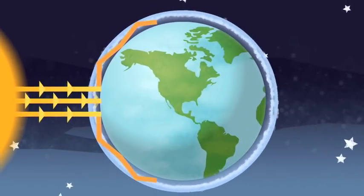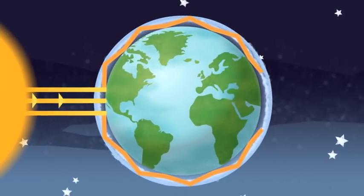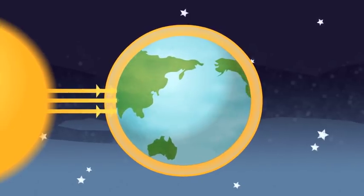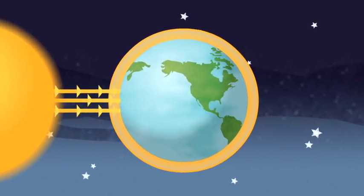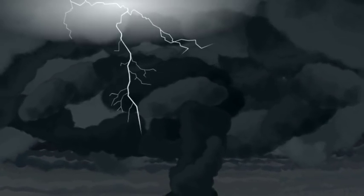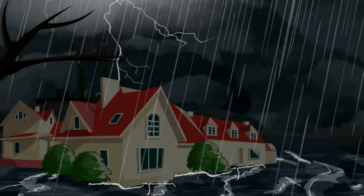So the more fossil fuels we burn, the more CO2 we produce, which traps more and more of the sun's heat. This global warming is causing our climate to change faster than ever before, with more extreme weather events, storms, droughts, floods and rising sea levels.